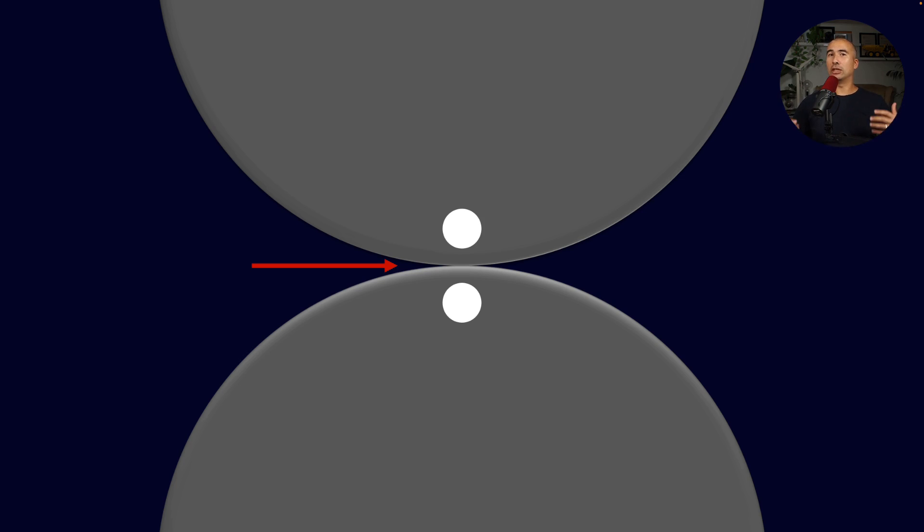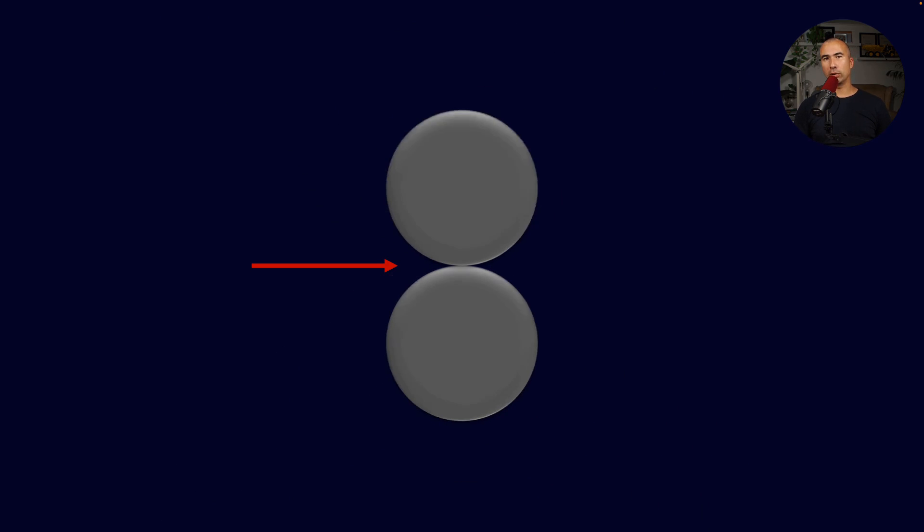So this gives us a little bit of the mechanics as we start to talk about what is the four ball test actually testing. Now in most circumstances, we don't actually have two balls that are rotating relative to each other.